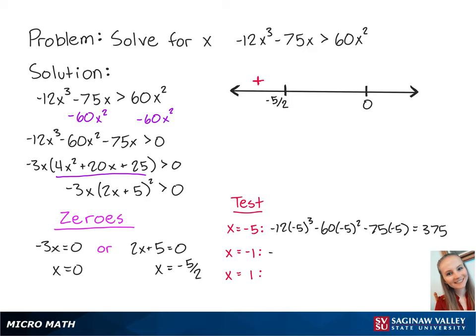For x equals negative 1, we have negative 12 times negative 1 cubed minus 60 times negative 1 squared minus 75 times negative 1, which is equal to 27. Since this number is positive, x values between negative 5 halves and 0 will make the left side of the inequality positive.